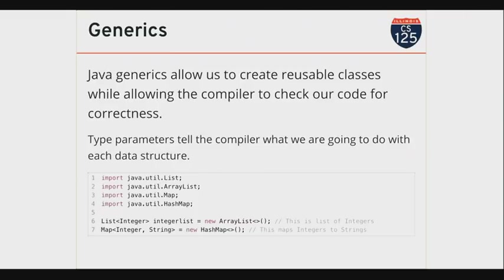I'm not creating a list of any type of Java object — I'm telling the compiler through this annotation in angle brackets that this list is going to contain integers. Down here I'm telling the compiler that this map is going to map integer keys to string values. When the code is compiled, the compiler checks that any time I put something into my integer list, it is in fact an integer, or something that can be upcasted to an integer. Same thing with my map — any time I add a mapping, the compiler checks that the key is an integer and the value is a string. As of Java 9, you can use the diamond operator, which just copies the type parameters from the left side.